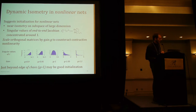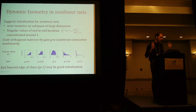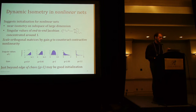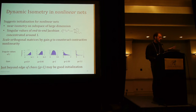It turns out that if you use a gain G slightly greater than 1 — beyond the edge of chaos, as it's called — you can essentially counteract the contracting non-linearities, and you get many singular values near 1. If you use a gain of exactly 1, the contracting non-linearities hurt you. And if you use a gain less than 1, it's really bad — it's going to take a long time to train. But this region where you scale by just a little bit more than 1 seems like it might be good.